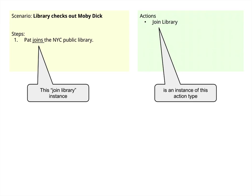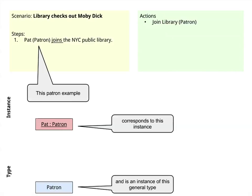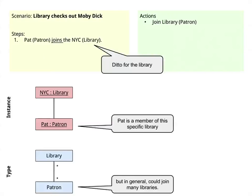In this case, we're trying to figure out how libraries work. We show that we've got this patron, Pat, who's joining the New York Public Library. This is something that everyone can engage in. Behind the scenes, what I'm doing in my mind is I'm building a mental model of what's happening here. I notice that there's an action going on, which is joining the library. So over in the corner, I create a list of all the actions that are occurring — in this case, joining the library. This is a specific action of Pat joining the library, and the other is that generally it's possible to join the library.